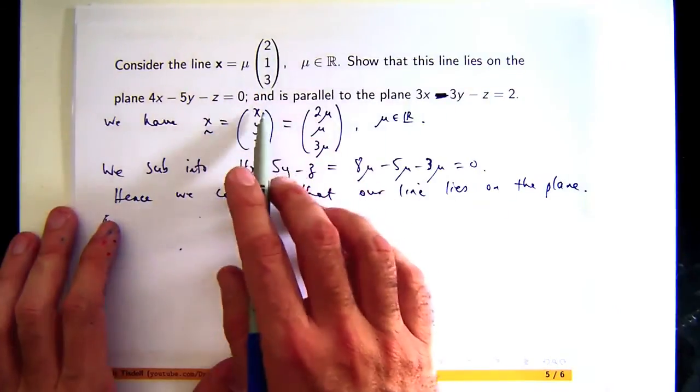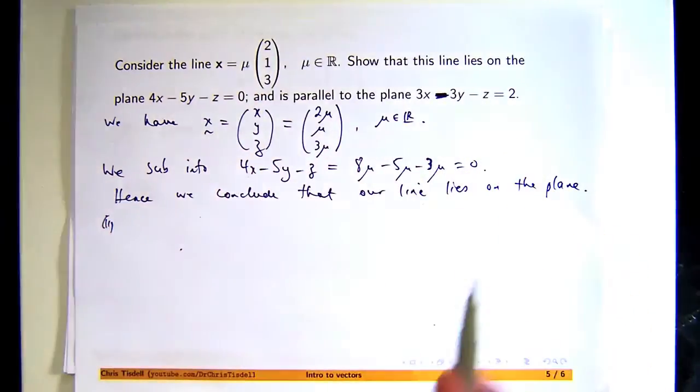We want to show that this line is parallel to this plane. So this takes a little bit more muscle. What do we mean when we say a line is parallel to the plane? You can kind of visualize it, but how do I check it? How do I actually prove it? Well, let me show you.